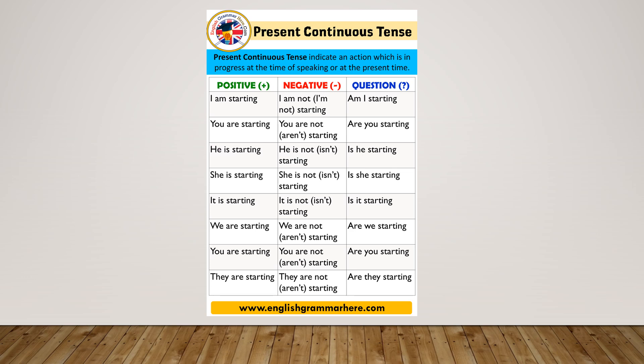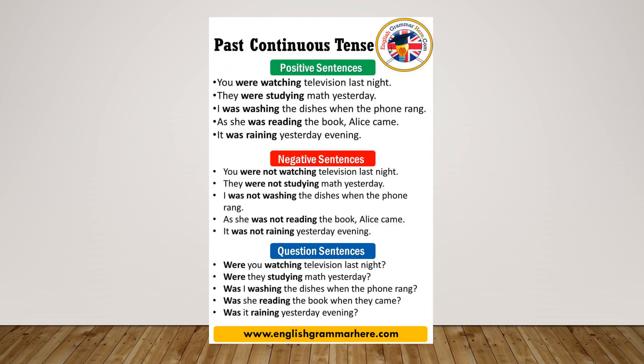I hope this much is clear to you all. In this slide we will discuss creating negative sentences in past continuous tense. First, let's understand what past continuous tense is. The past continuous tense is used to talk about things that were in progress in the past — that is, actions continuing from the past.